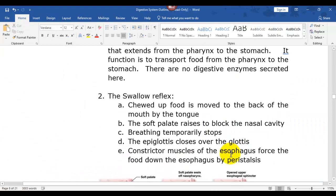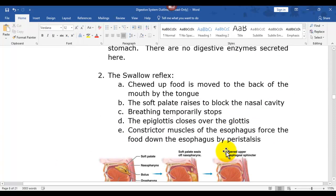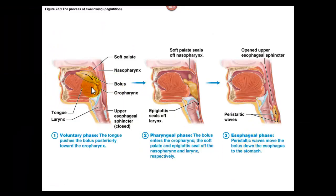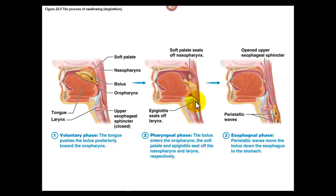There is a swallow reflex, and here are the steps of it. The tongue moves food to the back of the throat. The soft palate raises up and prevents anything from going into the nasal cavity — this is part of the swallow reflex. Food is forced down, and the epiglottis closes over the glottis to keep food and water from going down the trachea. Breathing stops momentarily because the epiglottis is sealing off the glottis.